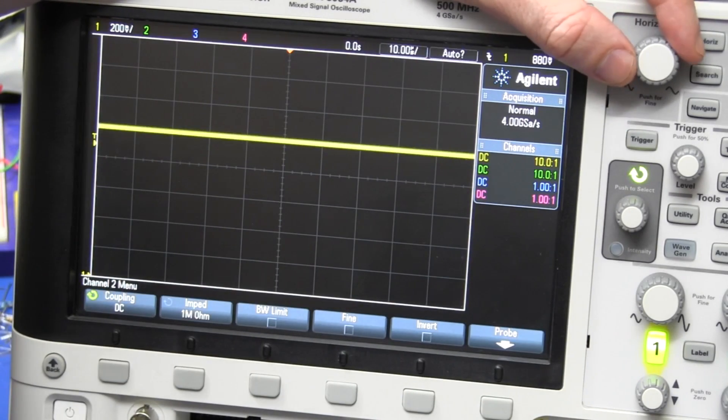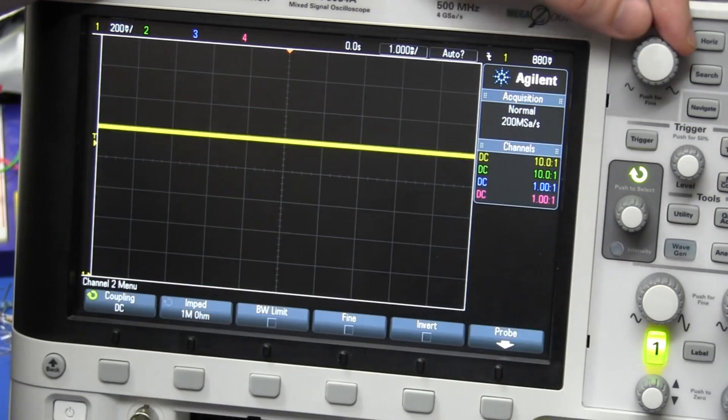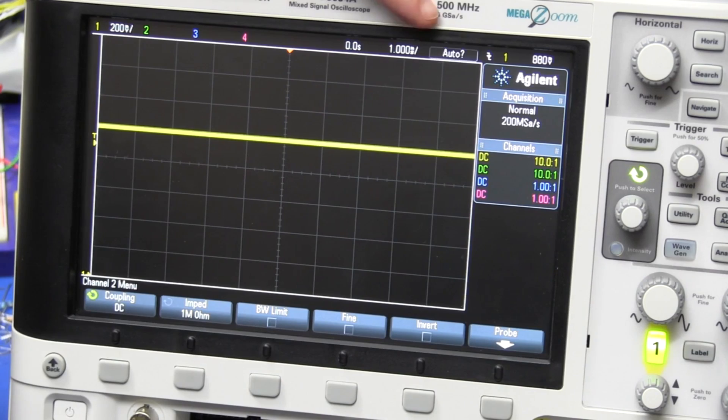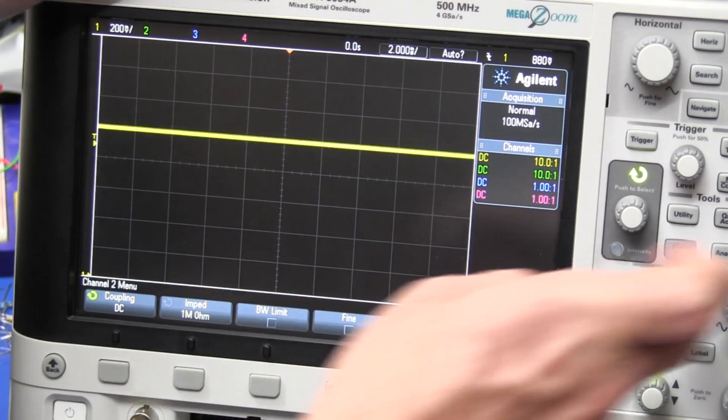And the line is a bit thick and fuzzy regardless of the time base, 10 nanoseconds per division, 10 microseconds per division, and that's because a wide bandwidth scope like this one, this is a 500 megahertz bandwidth scope, so it's going to be relatively noisy like that.